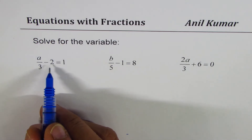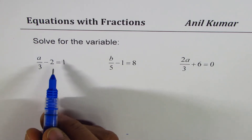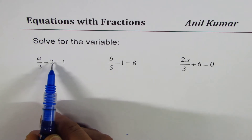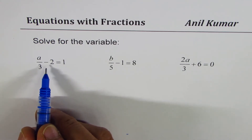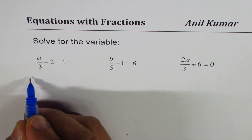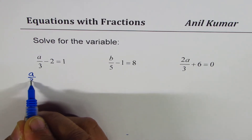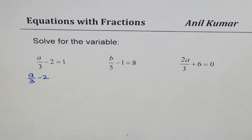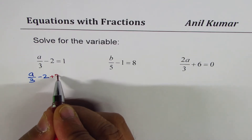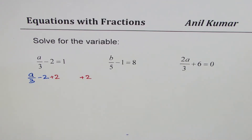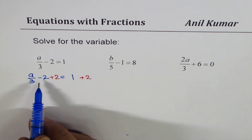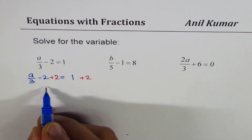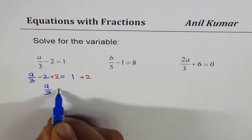We have a over 3 minus 2 equals to 1. The first step is to get rid of whatever is added or subtracted. We have minus 2 on the left side, so we'll do reverse operations. We can add 2 on both sides of the equation. That results in 1 plus 2 on the right, and minus 2 plus 2 is 0 on the left. So we get a over 3 equals to 3.